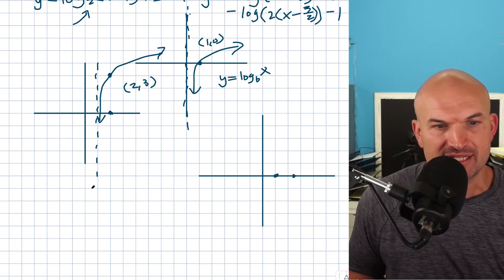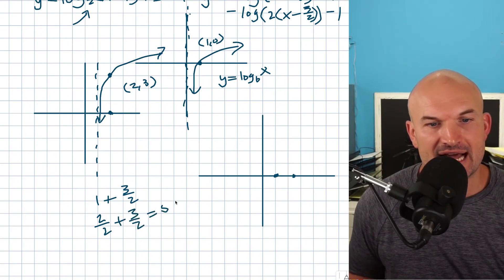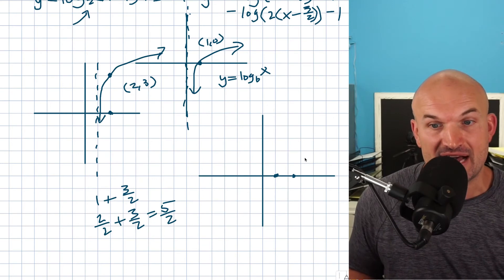Now again, if we want to figure out what this is, we started at 1 and then we added 3 halves. So therefore I can rewrite 1 as 2 over 2 plus 3 halves, which is going to now give me 5 halves. So this coordinate point now is at 5 halves.